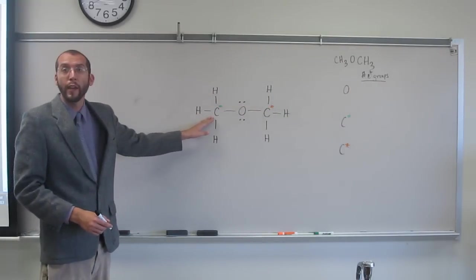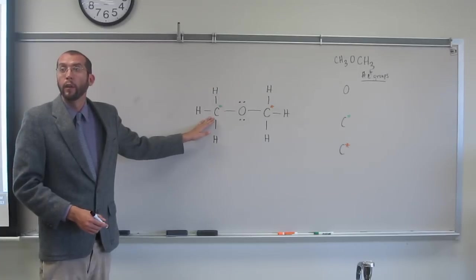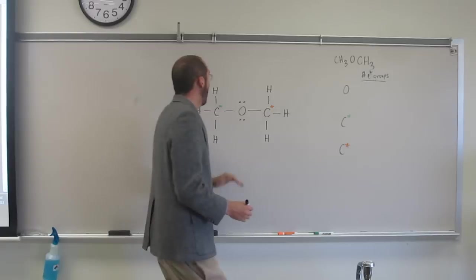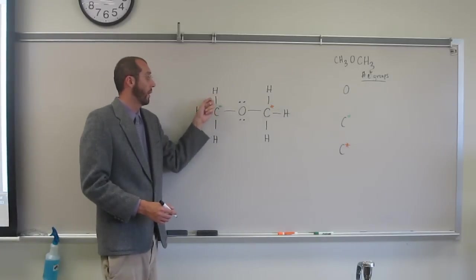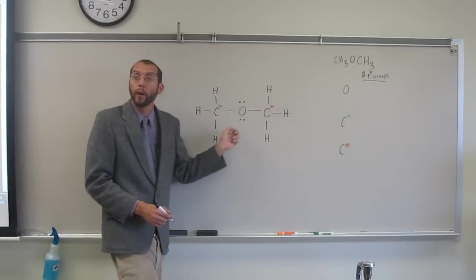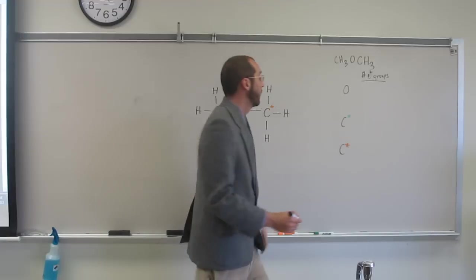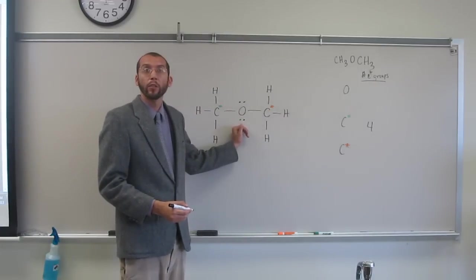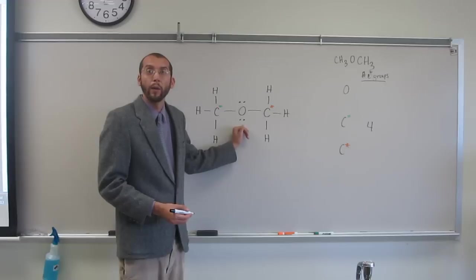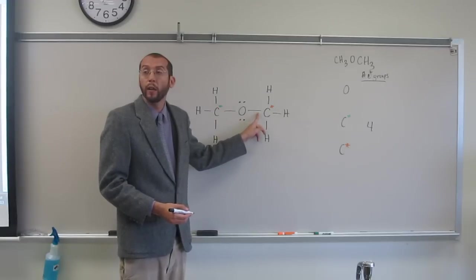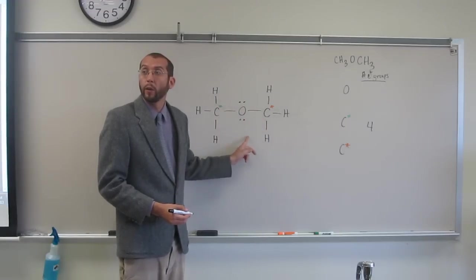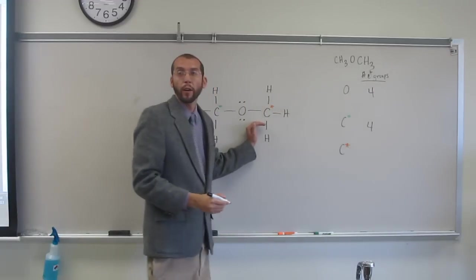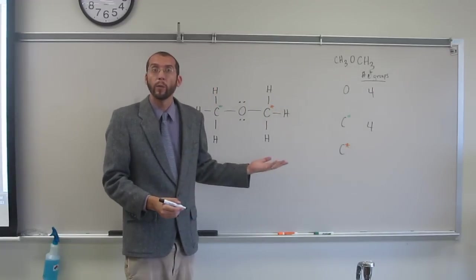So help me out. How many electron groups does that green star carbon have around it? Four. Is that right? Four? Why do you say four? Because there's one, two, three, four bonds around that carbon. Does everybody agree with that? So there's four electron groups. What about this oxygen here? How many electron groups does it have around it? Four. Four as well, right? Two of them being bonds and two of them being the lone pairs. Is everybody okay with that? And what about the orange star carbon? Four. Four as well, four bonds.